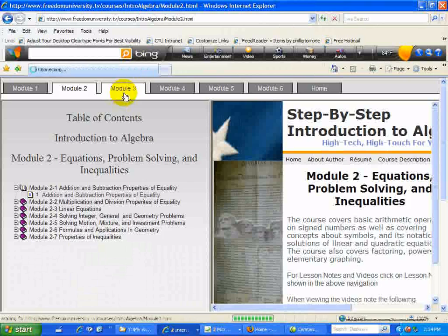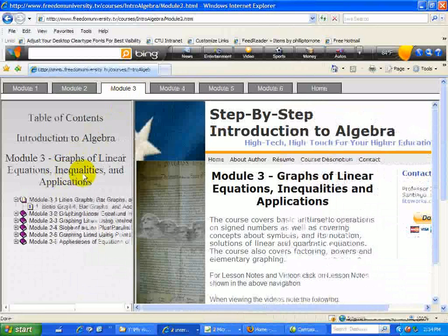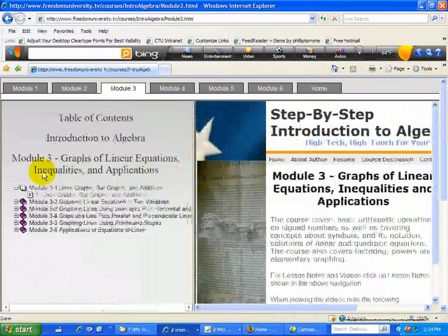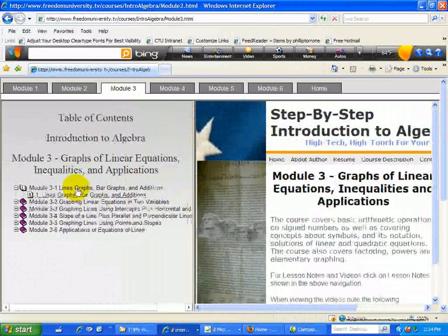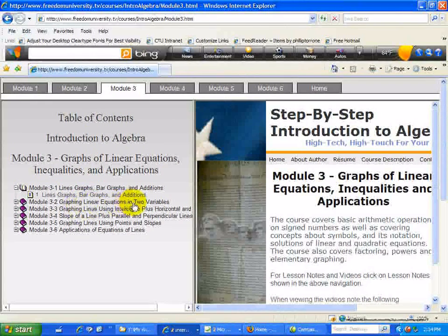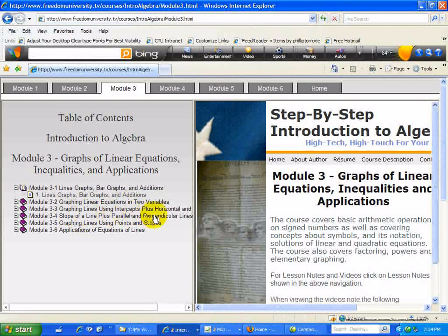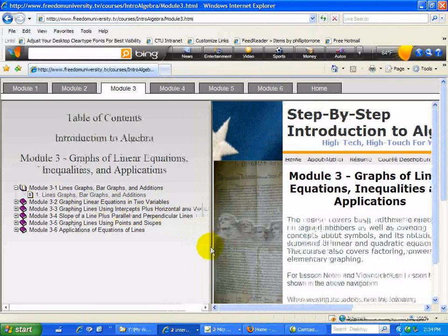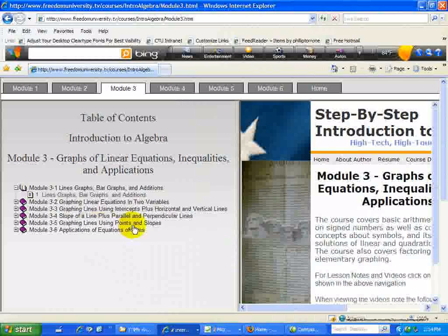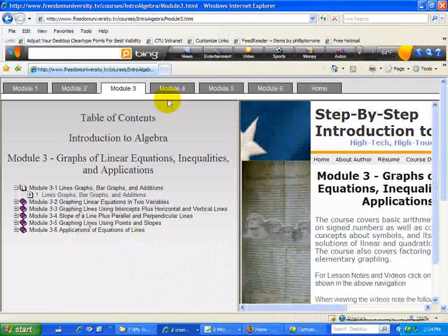Module 3 involves Graphs of Linear Equations, Inequalities, and Applications. You can adjust the width of the Table of Contents as I've shown here. The first section is Line Graphs, Bar Graphs, and Additions. From there, we talk about linear equations where we graph it in two variables. Then we graph lines using intercepts, including horizontal and vertical lines. Then we talk about the slope of a line plus parallel and perpendicular lines, graphing lines using points and slopes, and finally, applications of equations of lines.